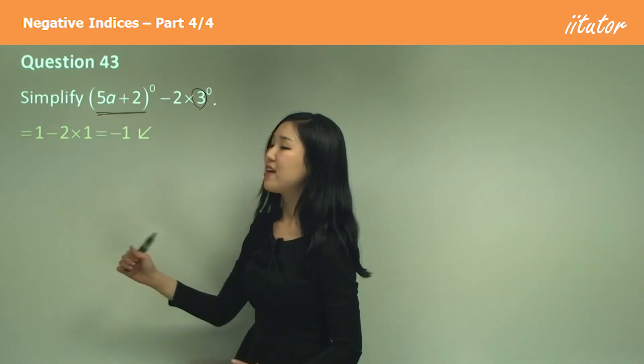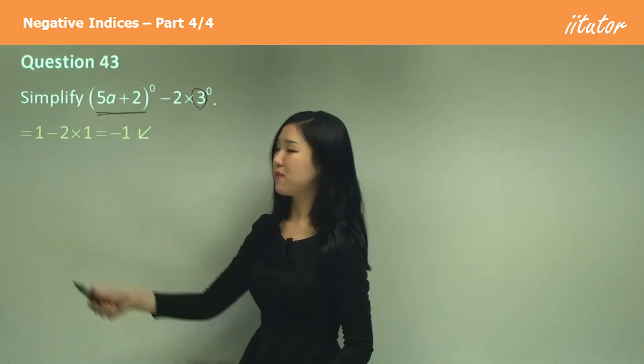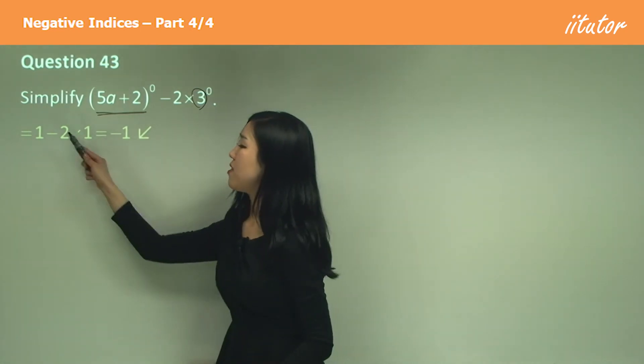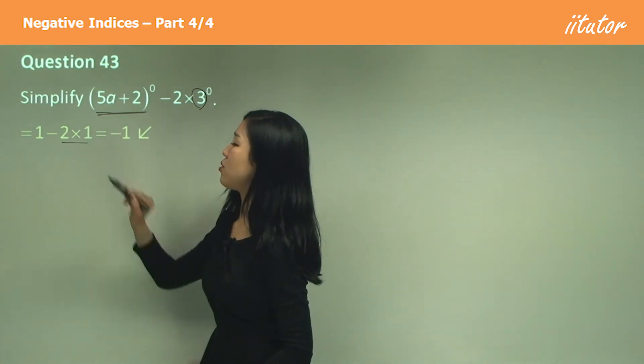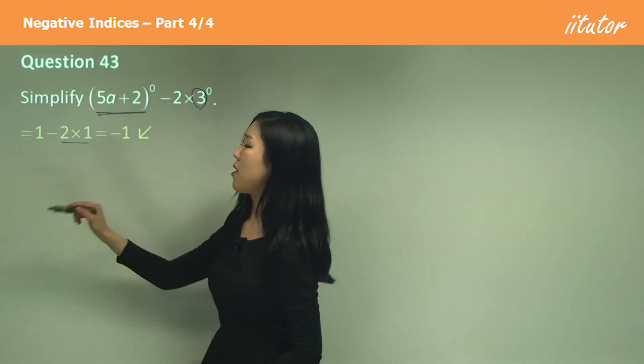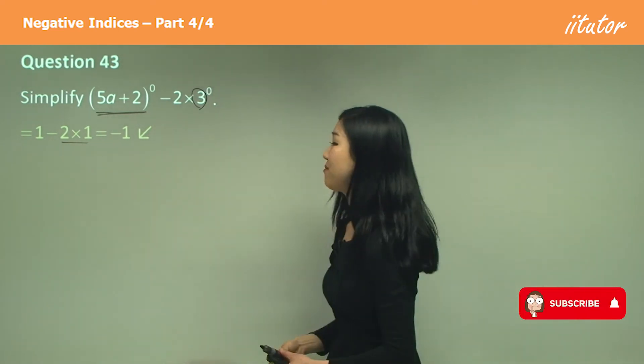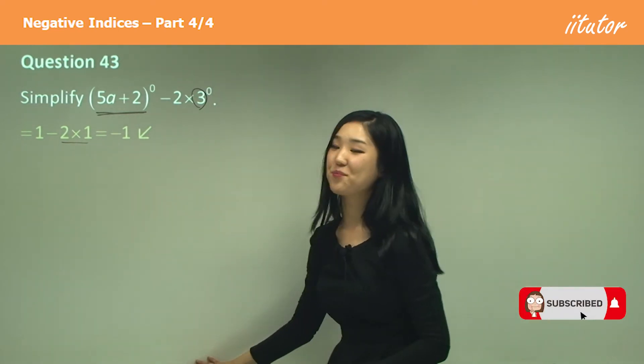So you simply have negative one, because this is just two — one minus two is negative one. And that's the answer.